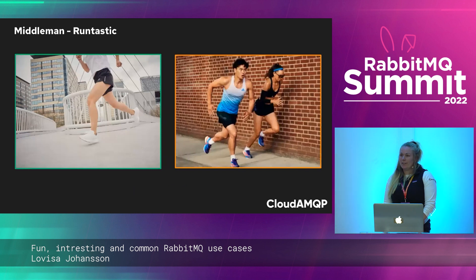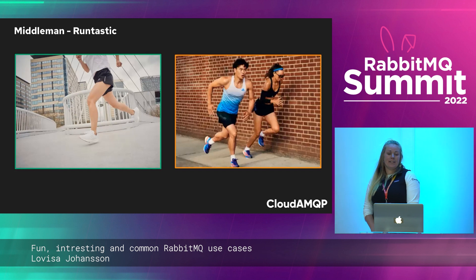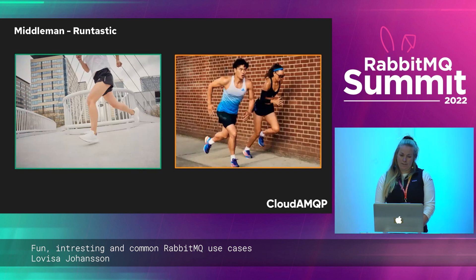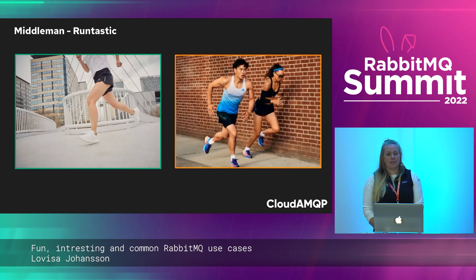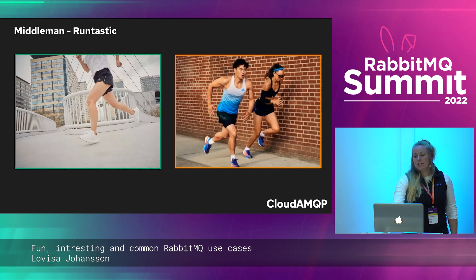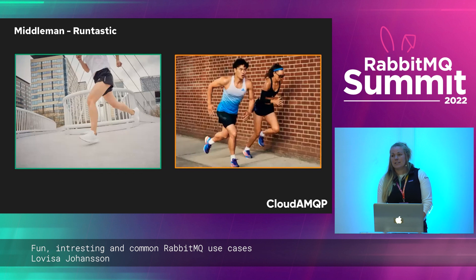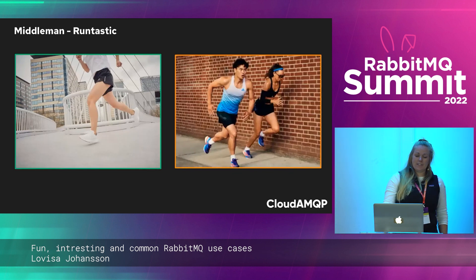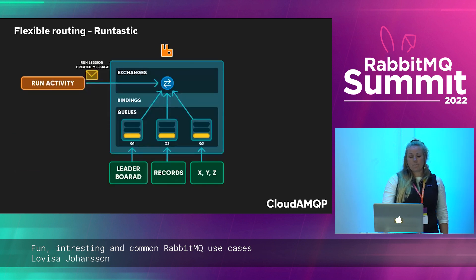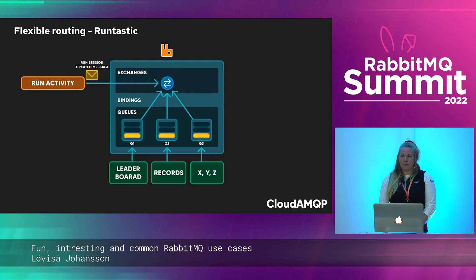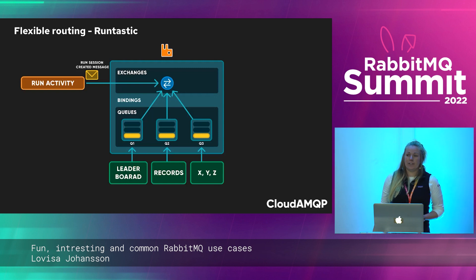On a beautiful day you go out running using the Adidas running app Runtastic. Afterwards you can look at your activity on the web, where data is shown on the leaderboard along with your newly achieved records. Runtastic has many services, each serving one purpose: one service handles the running activity, one the leaderboard, and another the records and routes. Today, Runtastic uses RabbitMQ to communicate between its services, which decouples them and allows for scaling. Runtastic also takes advantage of flexible routing in RabbitMQ — a new leaderboard service can easily subscribe to a completed run session, and the service responsible for the running activity does not need to care about what the subscribing services do with the data.